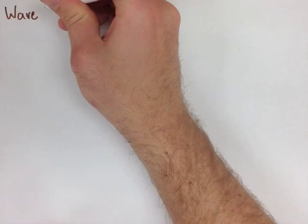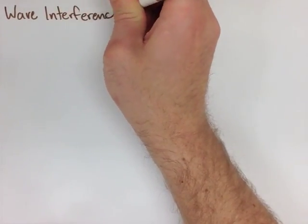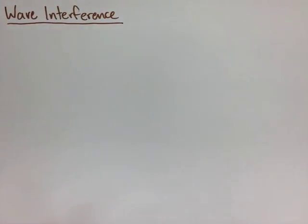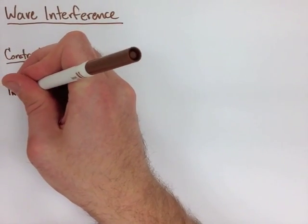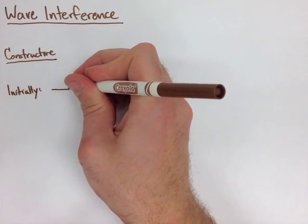For wave interference, we're going to ignore the bottom half of the page and just look at constructive and destructive wave interference. Now we're going to look at these two types of interference initially, when they meet, and then finally.